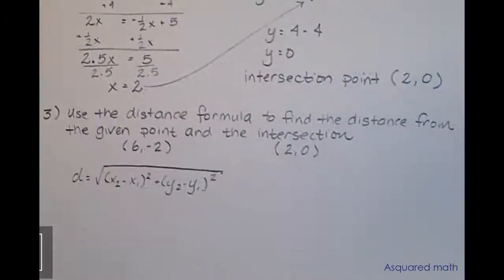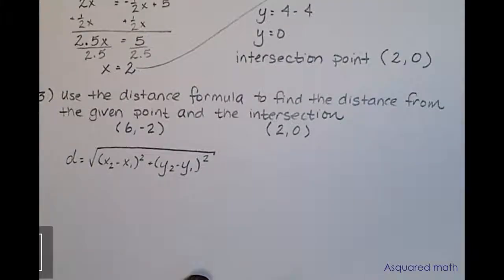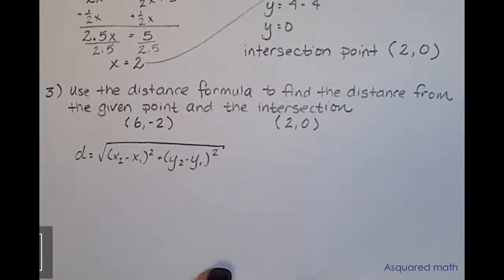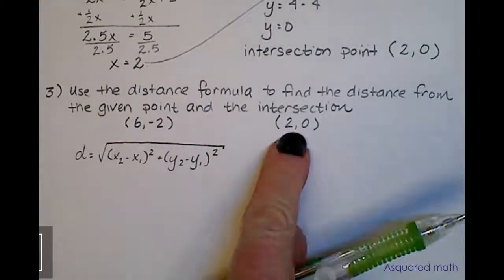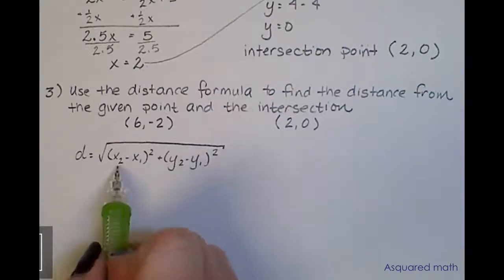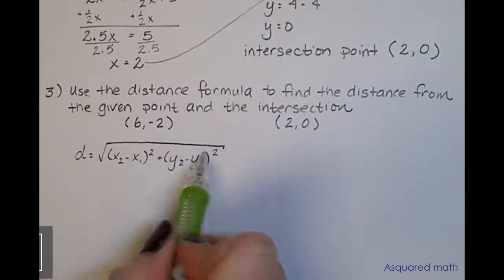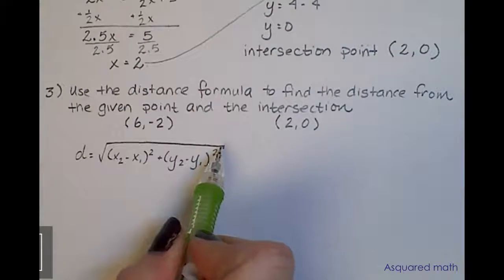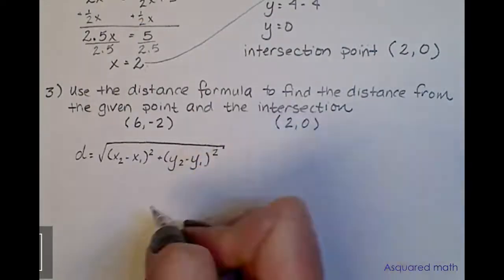The last step in this whole process is using the distance formula with those two points. We have our given point and our intersection, and we need to find the distance between those two. The distance formula is your change in x squared plus change in y squared, and square root that whole thing.